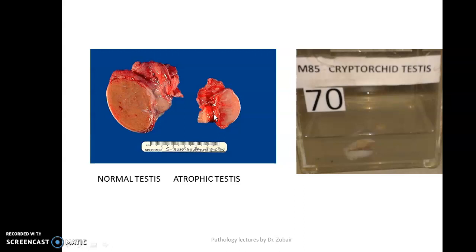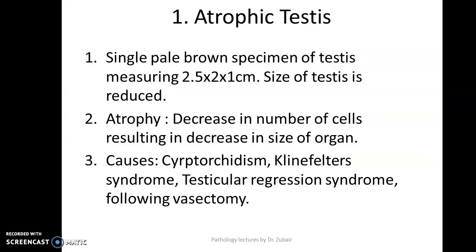The same specimen can be kept as part of your male genital system, in which case I will ask you about the causes of atrophic testes. When describing the specimen, you start by describing the organ: it is a single pale brown specimen of testes measuring so and so, and the size is reduced. Specific causes of atrophic testes are cryptorchidism, Klinefelter syndrome, testicular regression syndrome, and following vasectomy.